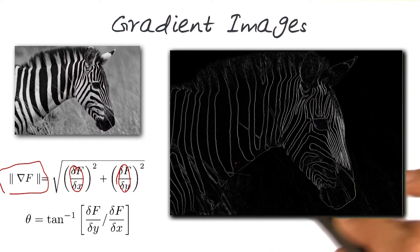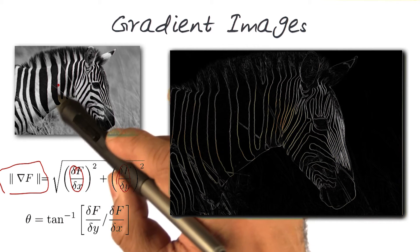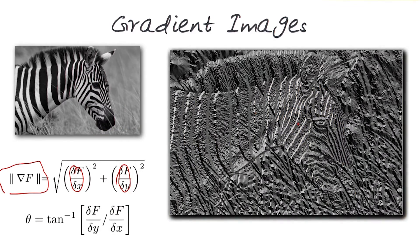If you notice, the zebra, all of the changes anywhere are now visible here. This image is the gradient angle, theta.